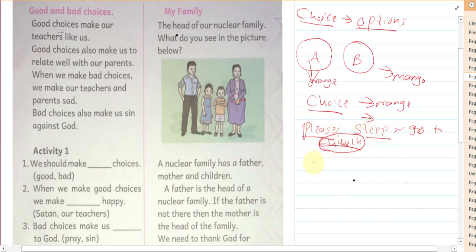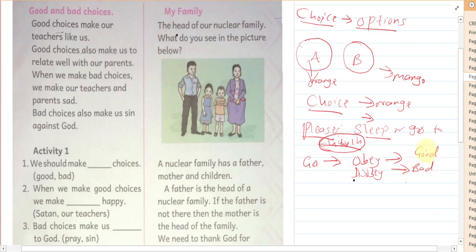Another example is whereby your parent or your teacher can send you somewhere. You can either obey or disobey. Obedience is a good choice; disobedience is a bad choice. So you should always embrace the good choice.